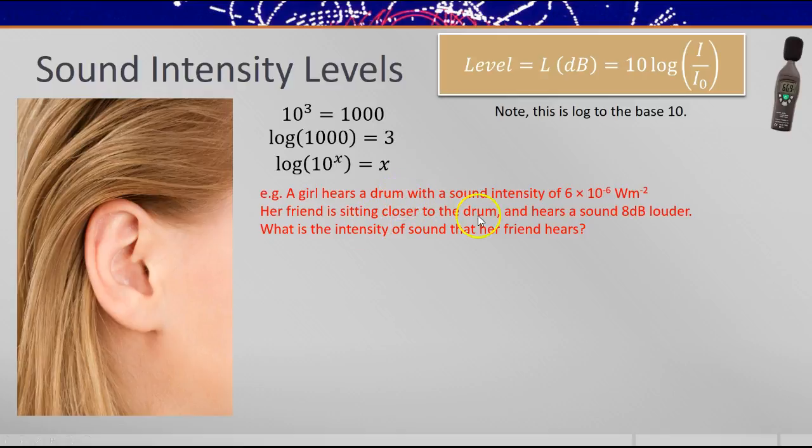To work out a new intensity given a decibel change. So if you hear a drum of this intensity, and her friend is sitting closer to that drum and hears the sound 8 decibels louder, what's the intensity of sound that her friend hears? So we can use this formula, and instead of the reference intensity being I₀, the threshold of human hearing, we could just say the change in level is 10 log I₂ over I₁. Look at two different intensities.